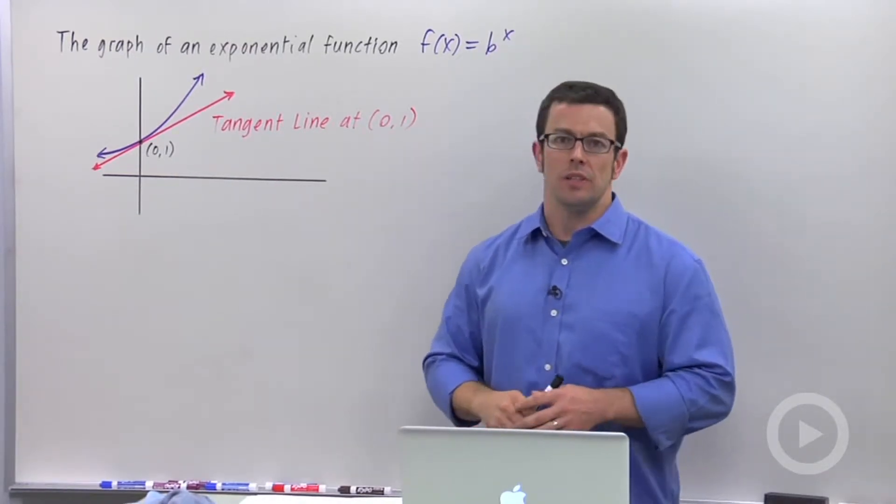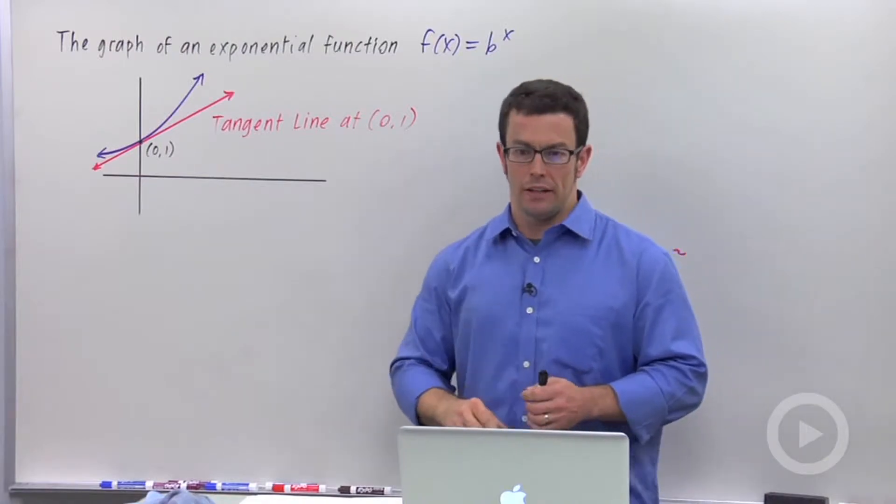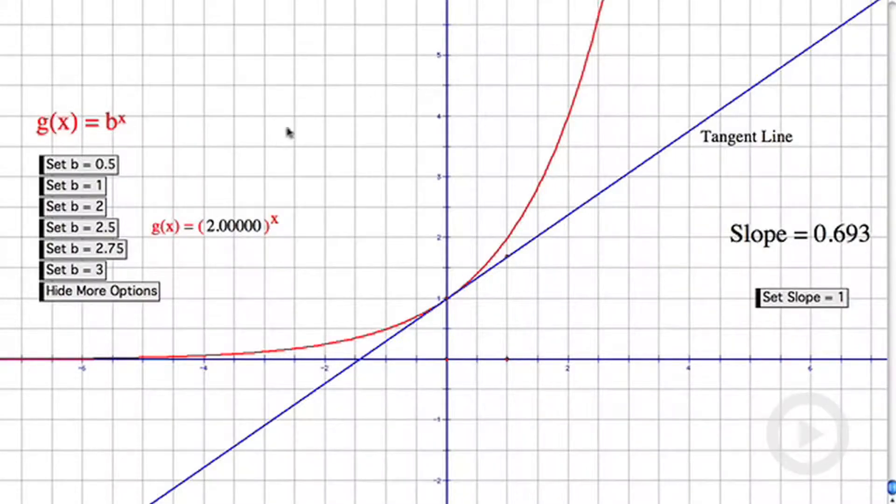In order to do that, I'm going to use a demonstration from Geometer's Sketchpad. Okay, so you can see I've got graphed the function g of x equals 2 to the x here. It's actually b to the x, but I can change the value of b to any value I want.